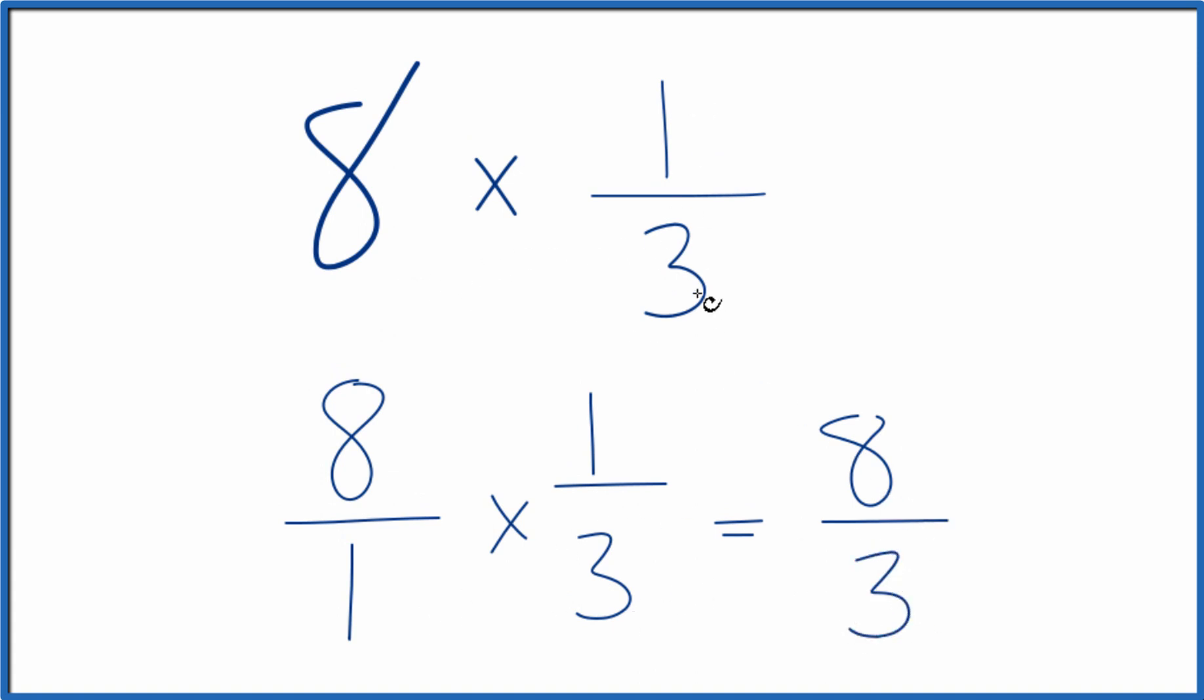So 8 times 1/3 equals 8/3. This is an improper fraction because 8 is larger than 3, so we could change it to a mixed number if you wanted to do that.